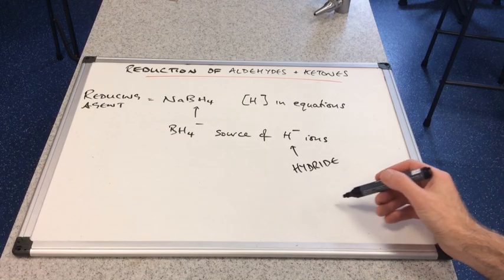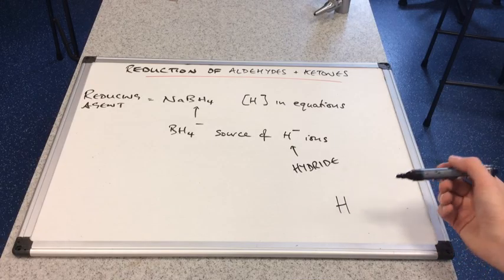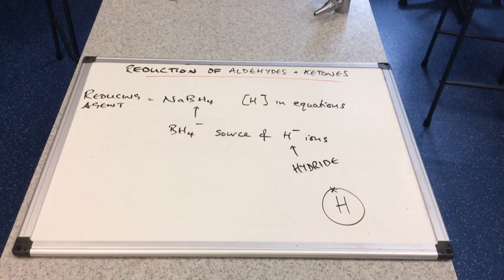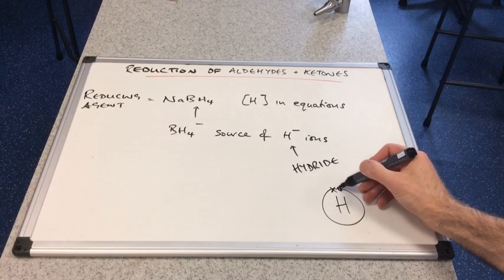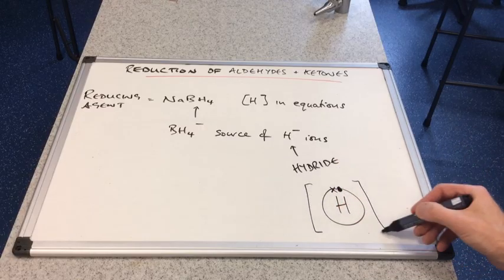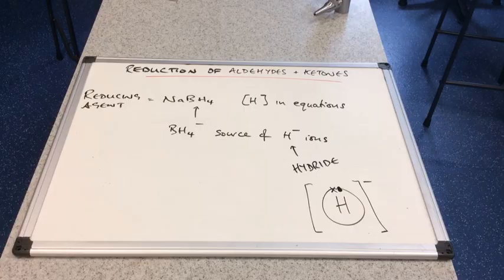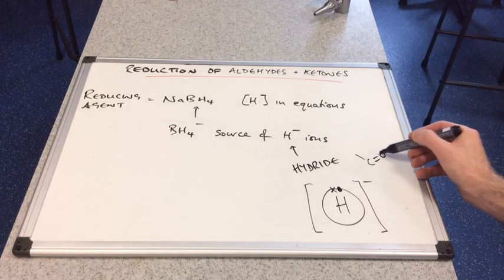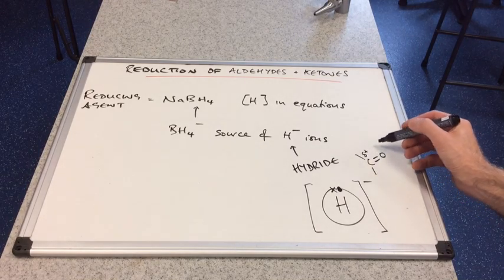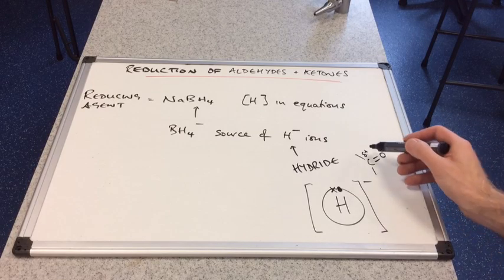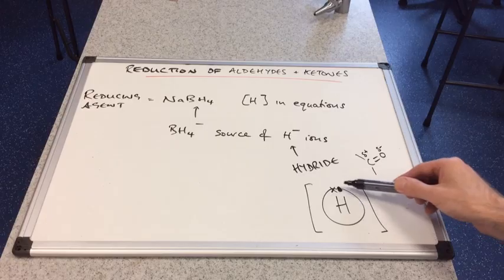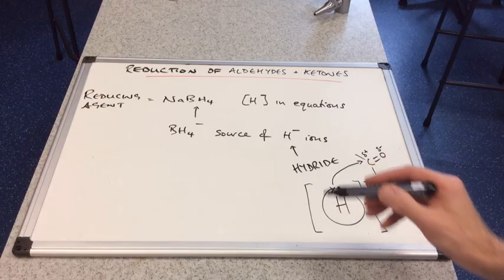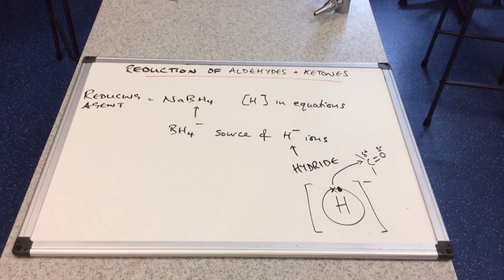So if we just quickly draw up the dot and cross diagram for a hydride ion, you can see its role in the mechanism which we're going to come on to. So a hydrogen atom, obviously, one electron in its outer shell. A hydride ion, well, it has an extra electron. So ions have to be in square brackets, remember. So there's the dot and cross diagram for the hydride ion. Now, if you think about the carbonyl group, we've got the C double bond O here. There's a dipole on this bond. So we've got a slightly positive carbon. And this lone pair of electrons on this hydride ion is obviously going to be attracted to that carbon. And so that will feature in the mechanism.